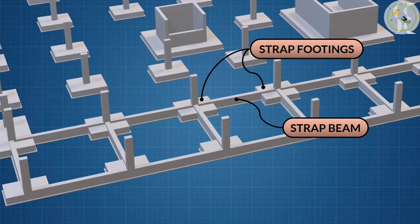A strap footing is more economical than a combined footing when the allowable soil pressure is relatively high and the distance between the columns is large.